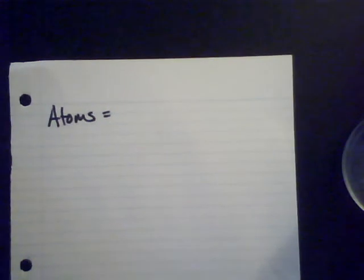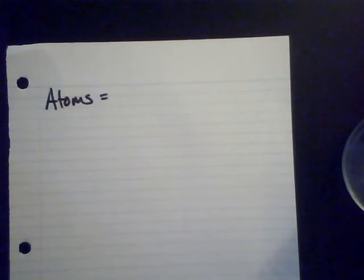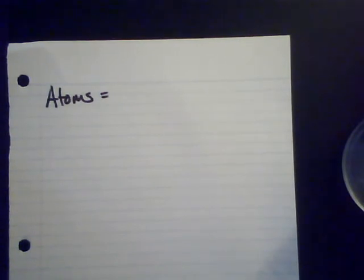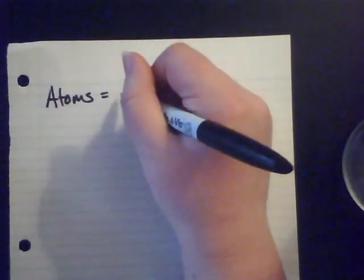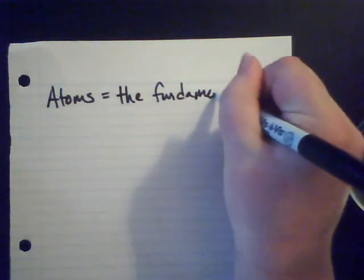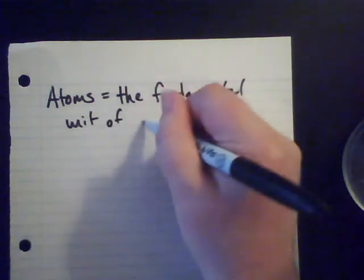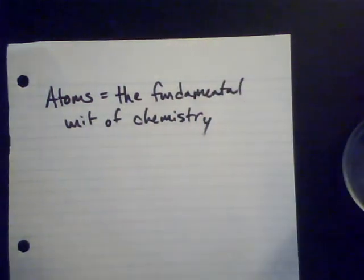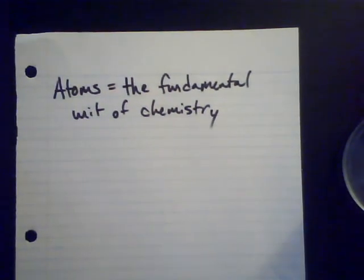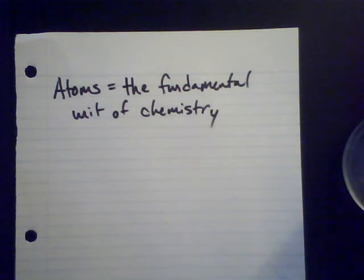Out of John Dalton's experiments and experience, we ended up with basically a definition for atoms — that's essentially atomic theory. Atoms are the fundamental unit of chemistry. This isn't to say they can't be broken down further, because we know that atoms are made up of subatomic particles, and even smaller sub-subatomic particles like quarks and muons. But for those of us in the chemistry field, atoms are the fundamental unit that help us with our study of matter.